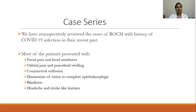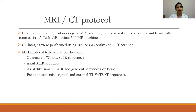We retrospectively reviewed cases of ROCM with history of COVID-19 infection in their recent past. Most patients presented with facial pain and facial numbness, orbital pain and periorbital swelling, conjunctival suffusion, diminution of vision to complete ophthalmoplegia, blindness, headache, and stroke-like features. Patients underwent MRI scanning of paranasal sinuses, orbit, and brain with contrast in a 1.5 Tesla GE Optima 360 MR machine.